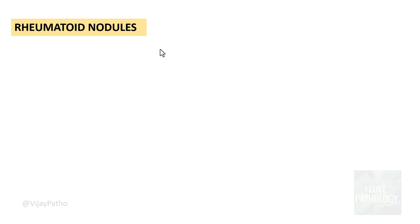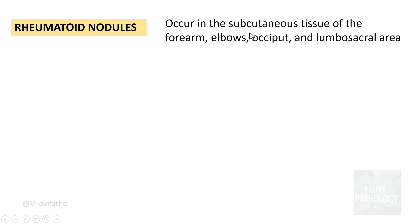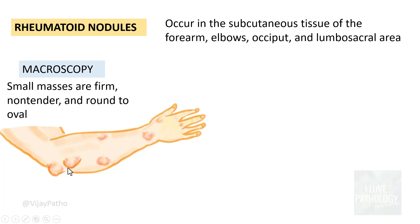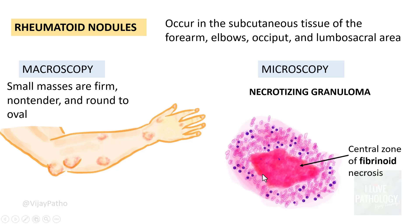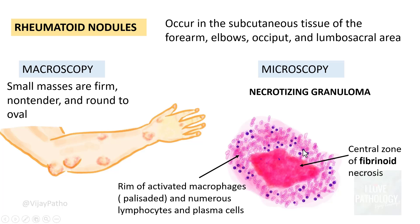Some patients can have rheumatoid nodules — small nodules seen in the subcutaneous tissue of the forearm, elbows, occiput and lumbosacral areas. They are small, firm, usually non-tender and round to oval masses. On microscopy, these are necrotizing granulomas: there is a central zone of fibrinoid necrosis surrounded by a rim of activated macrophages in a palisading pattern, along with lymphocytes and plasma cells as inflammatory infiltrates. This necrotizing granuloma with palisaded macrophages is characteristic of the rheumatoid nodule.